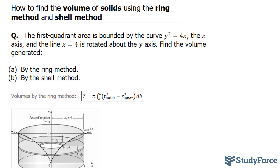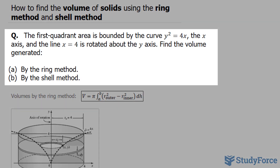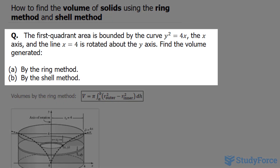In this lesson, I'll show you how to find the volume of solids using the ring method and shell method. The question reads: the first quadrant area is bounded by the curve y squared equals 4x, and the x-axis and the line x equals 4 is rotated about the y-axis. Find the volume generated by (a) the ring method — some textbooks call it the washer method — and (b) the shell method.